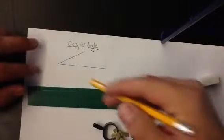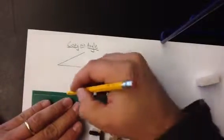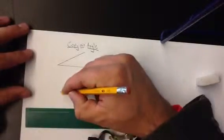To copy an angle, you usually start with an angle like this, and you'll need to give yourself a line to construct the copy from. You can pick the endpoint or any point on the line to begin.